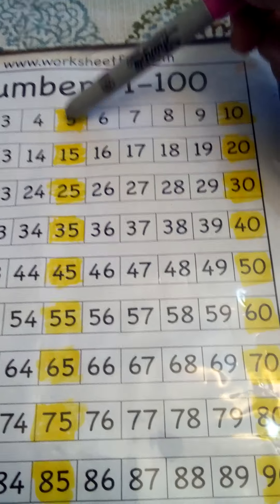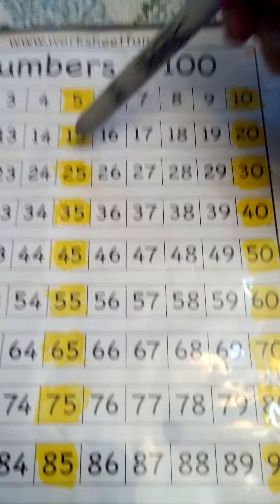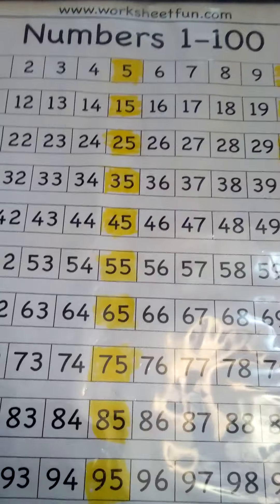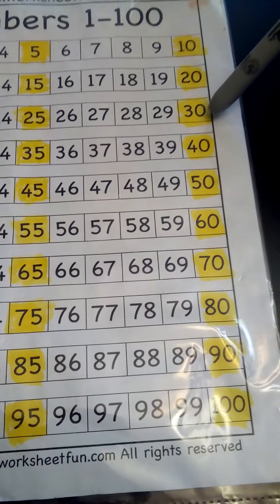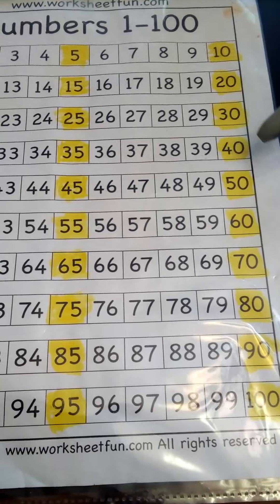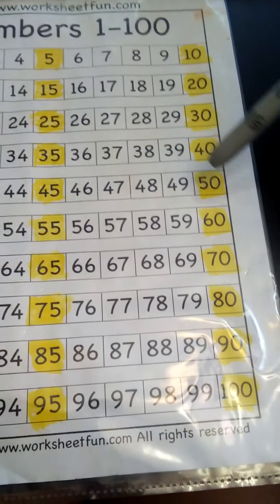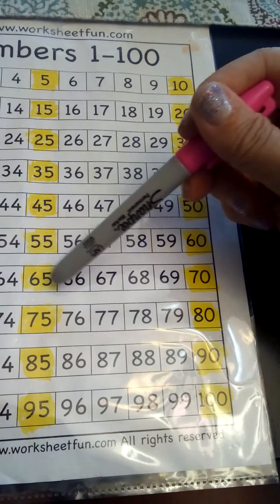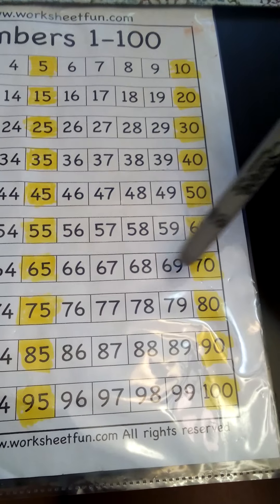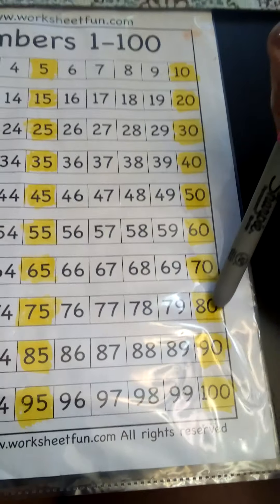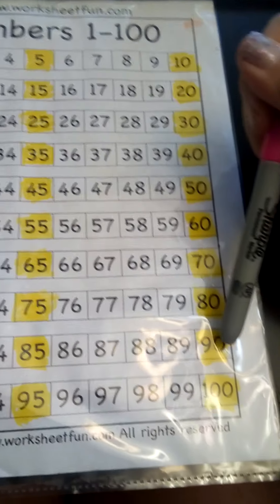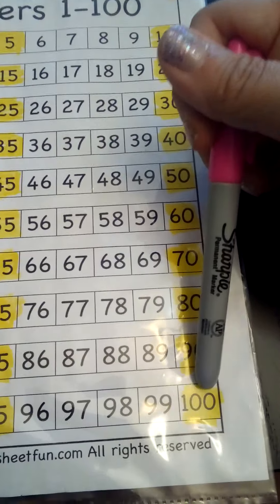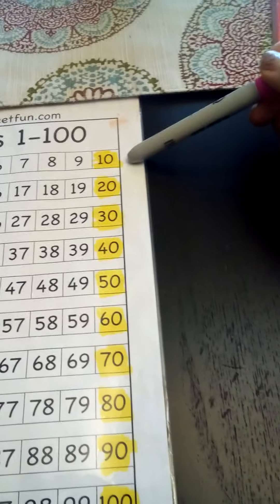Five, 10, 15, 20, 25, 30, 35, 40, 45, 50, 55, 60, 65, 70, 75, 80, 85, 90, 95, 100. Okay. Let's go by tens. Ready?